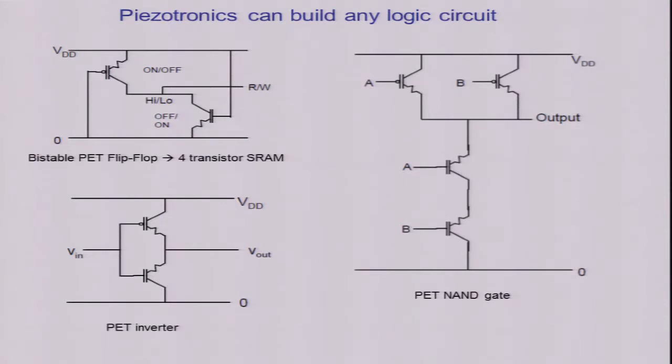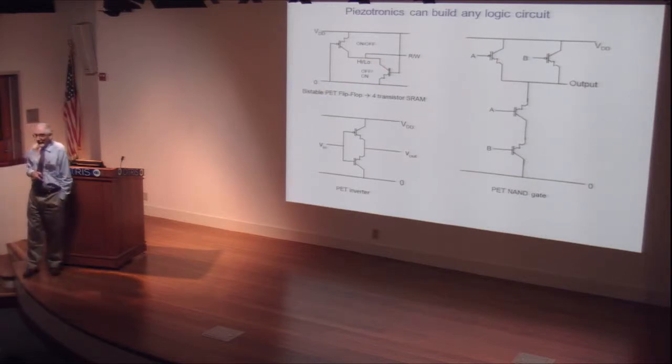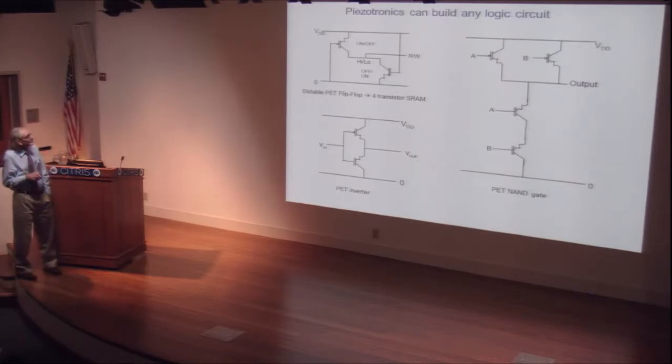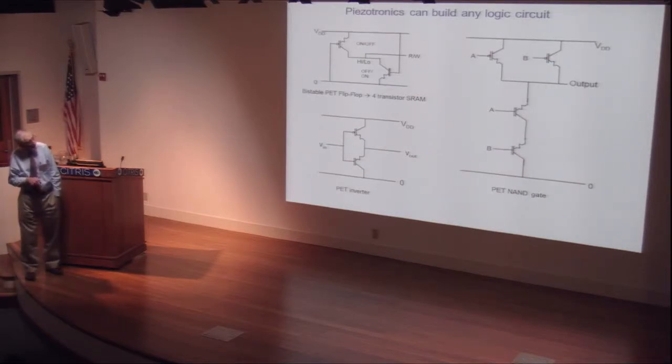This is some of the logic you can create with this device. This is a very simple two-device flip-flop, which you can build. If you add two more devices, you have a four-device SRAM. This is the inverter, exactly the same as in CMOS. This is the NAND gate. As a matter of fact, for optimal operation, you should use a four-terminal device in there.